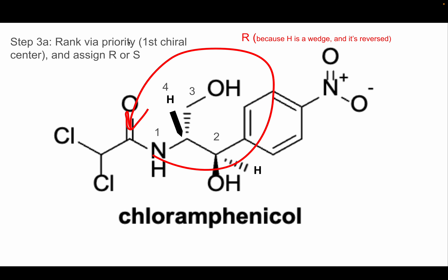Step three is to rank the priority groups. We're going to do the first chiral center. You need to look at the first atom branching off of each group. So we go here: we have a hydrogen, a carbon, a carbon, and a nitrogen. How you assign priority is whichever one is the most massive wins. Nitrogen is 14 AMUs, carbon is 12, and hydrogen is 1.01. So we give nitrogen first priority. These two carbons tie — we'll get to that. And the hydrogen gets fourth priority because at 1.01 AMUs it's significantly less than carbon.